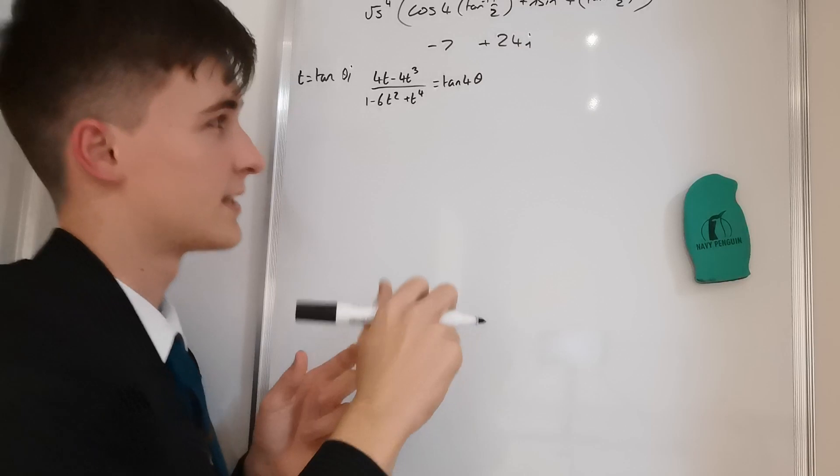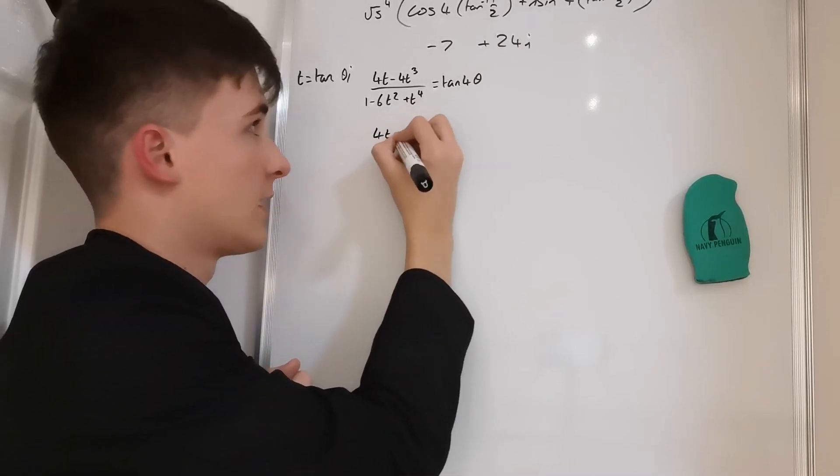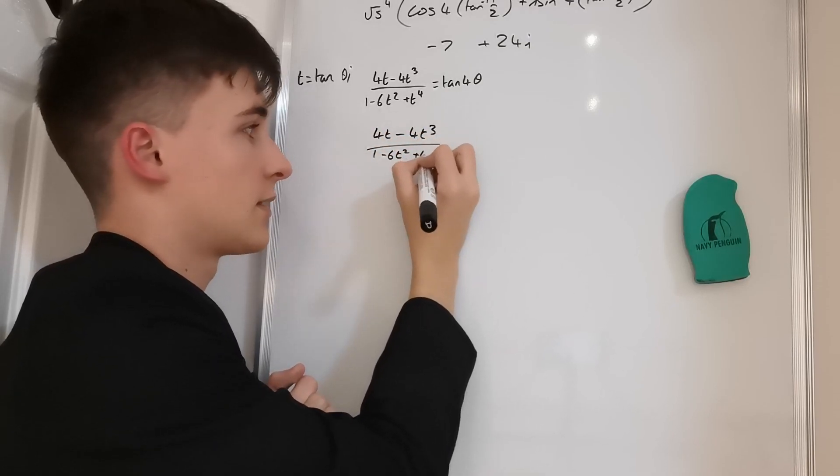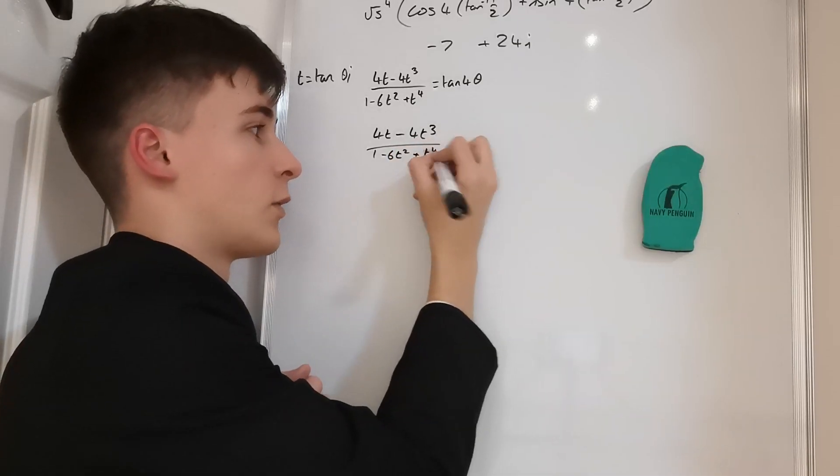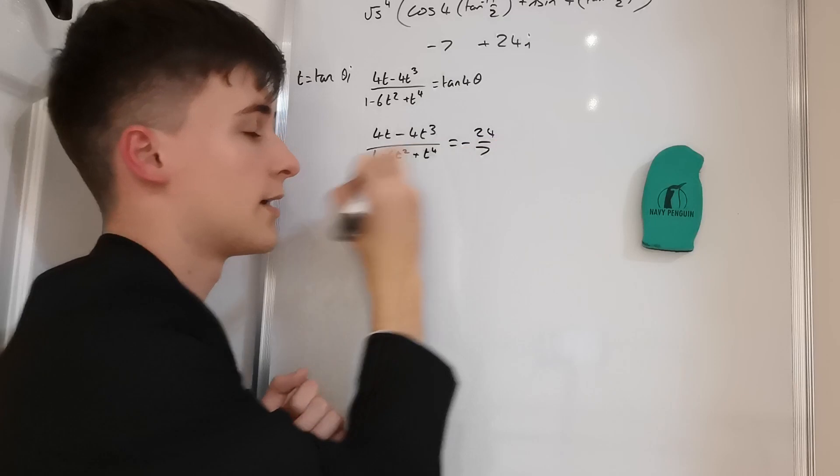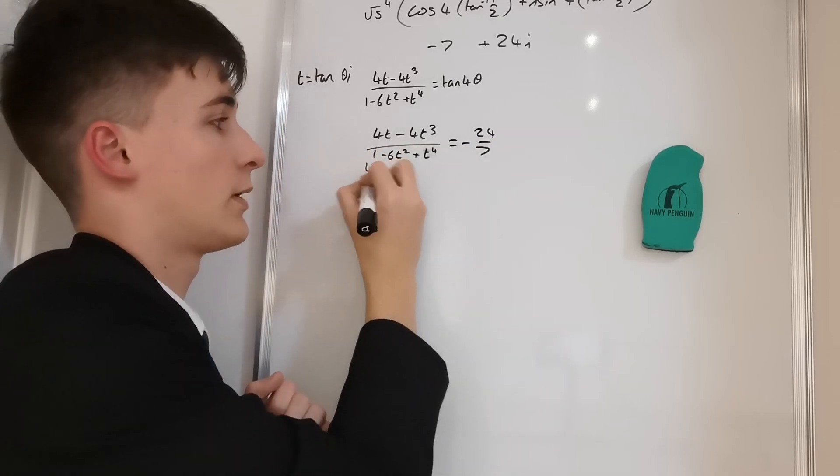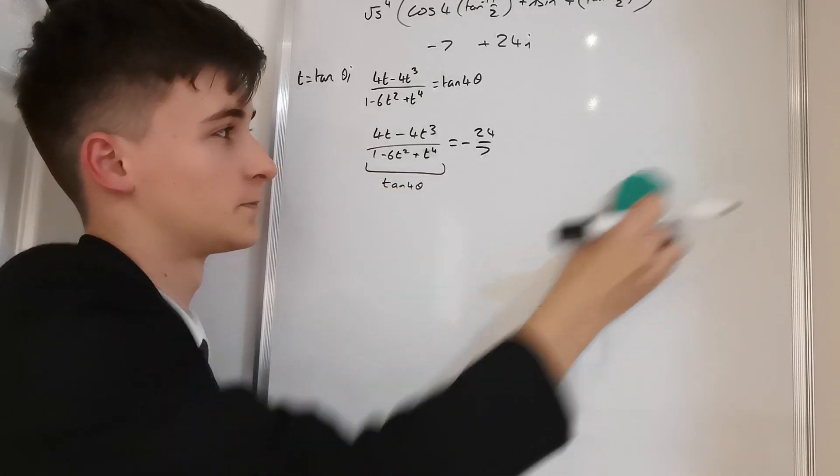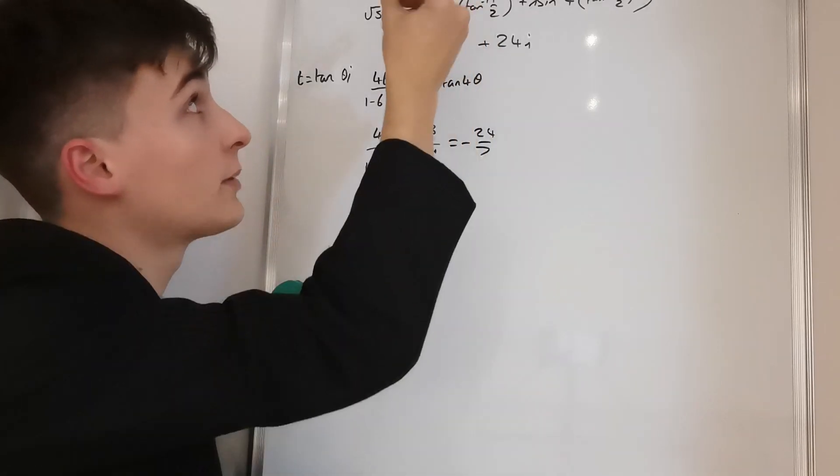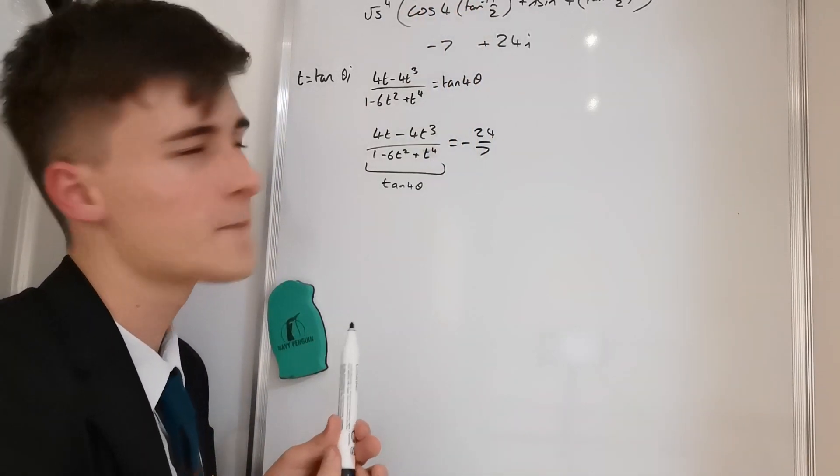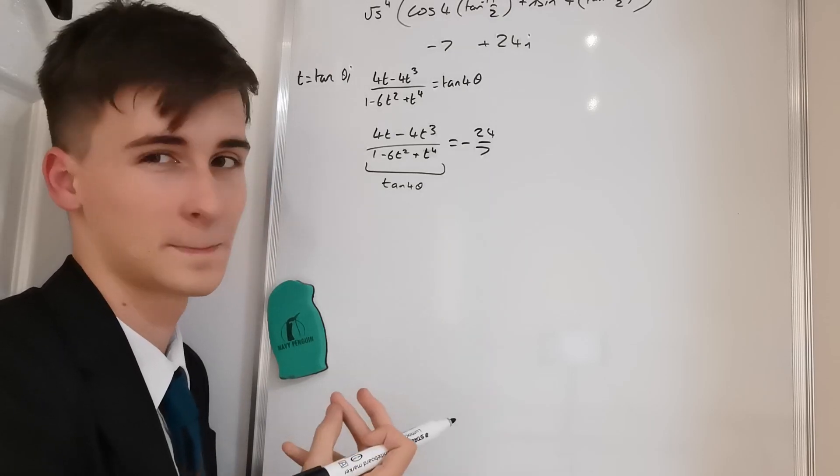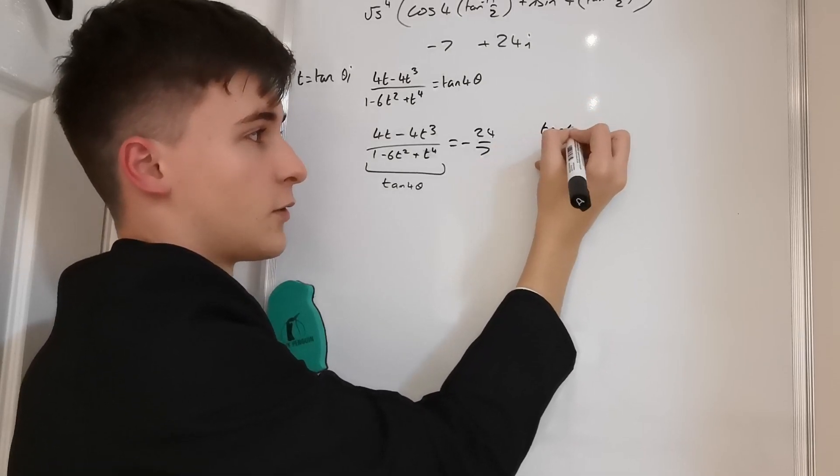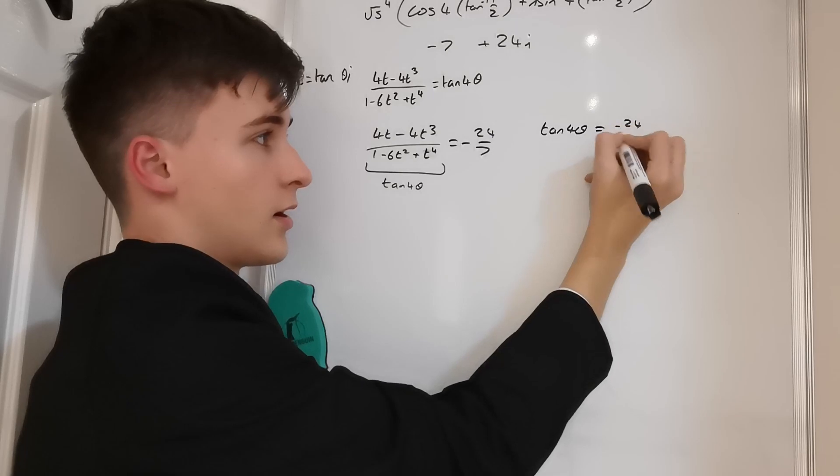So the next part is quite weird. So it says that (4t - 4t³) / (1 - 6t² + t^4) is equal to -24/7. And then we know that this is tan(4θ) and t is equal to tan(θ). So we can say, it says that by considering the argument of 2+i, which we did all the way back up there, show that a half is the root of the equation. Very strange. So this is how I went about it.